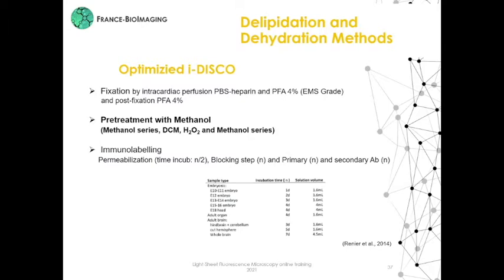Next is the immunolabelling itself with permeabilization, blocking, like in normal immunofluorescence, and antibody incubation. N is the time incubation, and as shown in this table, you have to adapt the time incubation to the sample size. The final step is the clearing: dehydration in tetrahydrofuran, delipidation in dichloromethane, and RI matching in DBE. The DBE can also participate in delipidation.